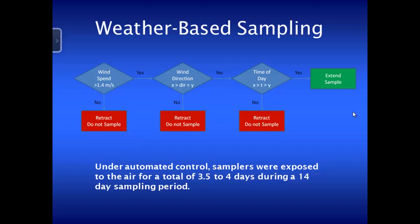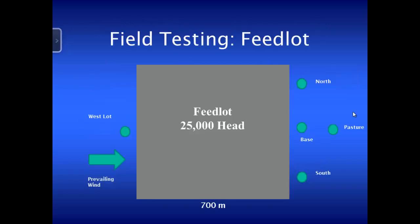After two weeks we retrieve the cartridge, take it in, run it through our IC, and find out what the time-averaged ammonia concentration was over that period.